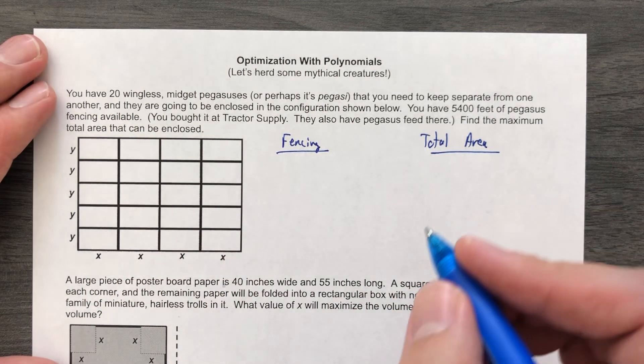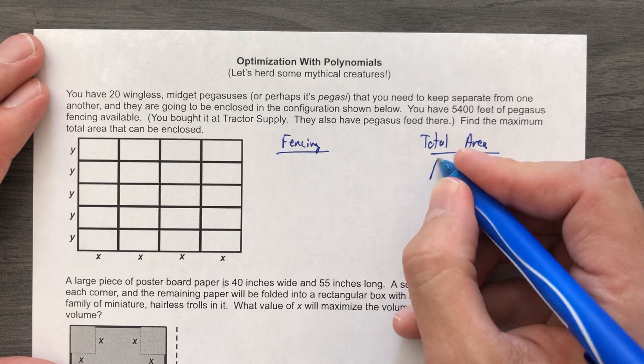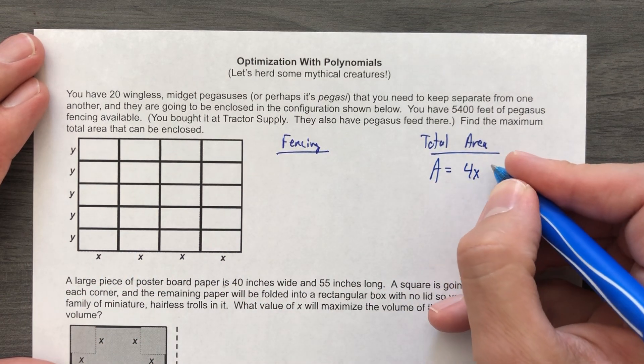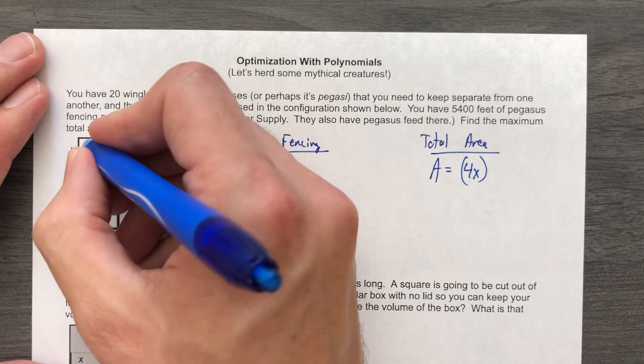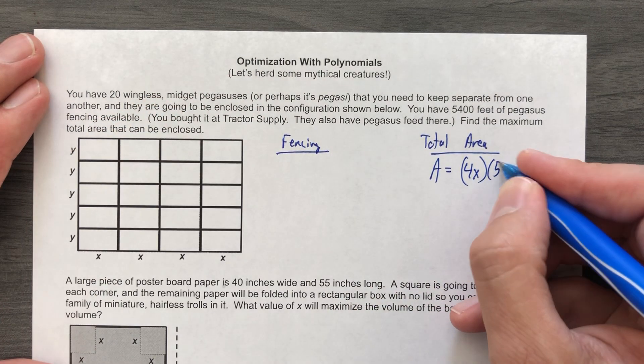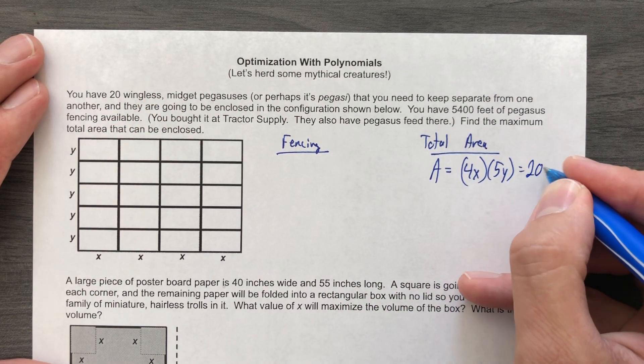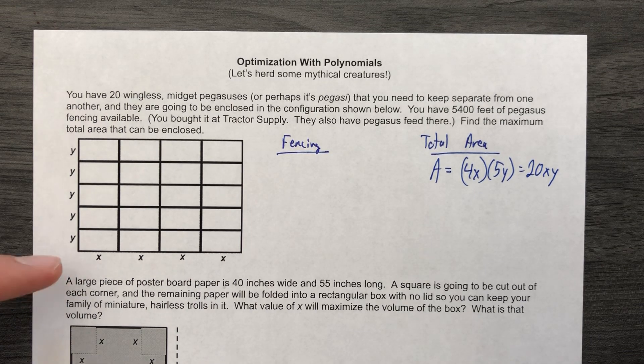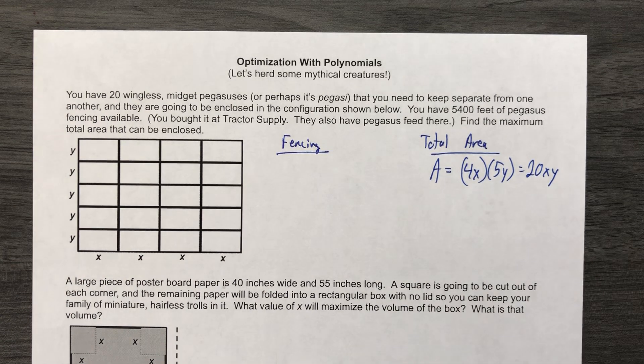Total area of this thing. Total area would be, well, the area is, let's see, 4X multiplied by 5Y. It's a rectangle, right? 4X times 5Y and that would be 20XY, which makes sense. There's 20 of these little rectangles and each one is X by Y. That's great.